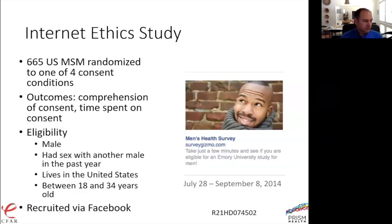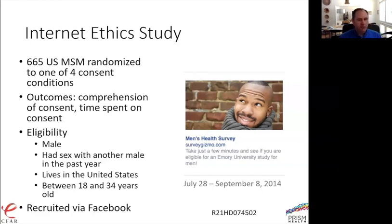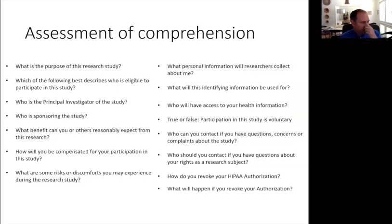This is a study we did at Emory about what consent looks like for online surveys. We had 665 MSM who enrolled and were randomized to receive consent in one of four different ways. Our outcomes were how well people understood the consent elements and how much time they spent in the consent process. To participate, participants had to be male, have had a male sex partner in the last year, live in the United States, and be between 18 and 34 years old. We recruited through Facebook.